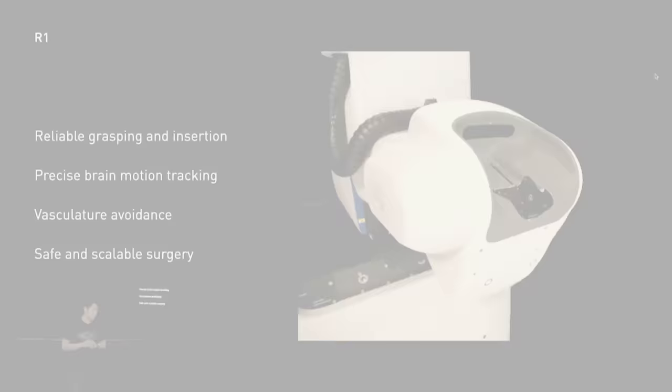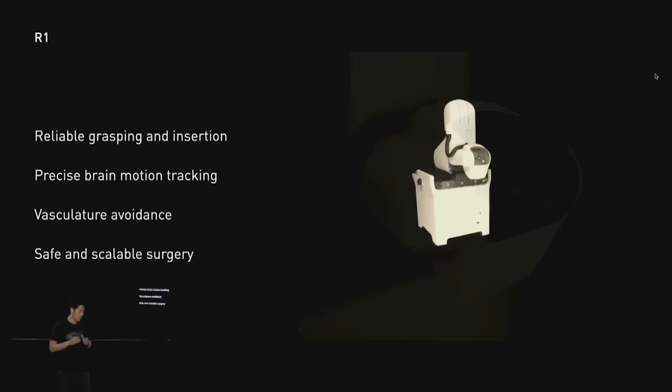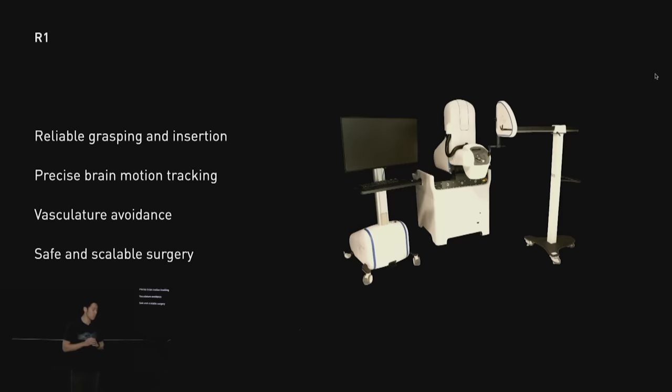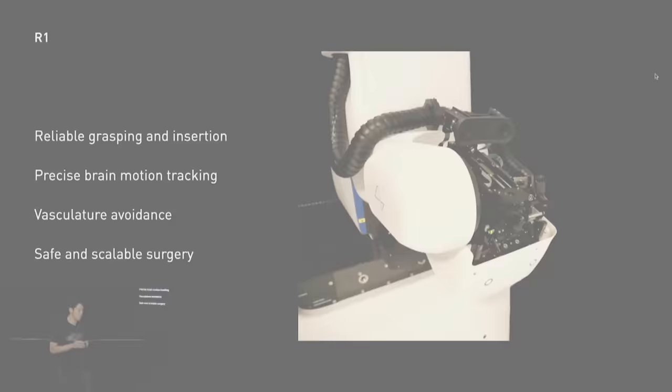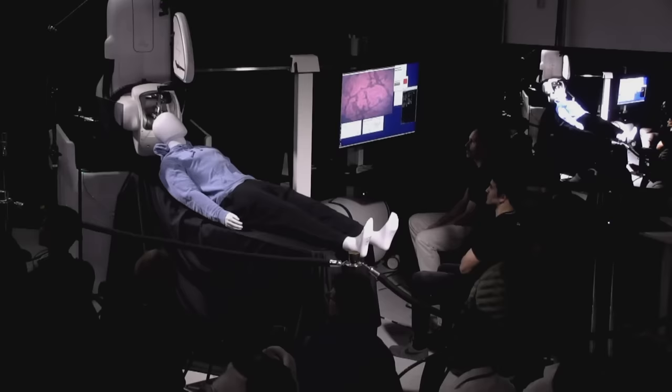For implanting our device safely into the brain, we built a surgical robot that we call the R1 robot. It's capable of maneuvering these tiny threads that are only on the order of a few red blood cells wide and inserting them reliably into a moving brain while avoiding vasculature. So here it is. That's our R1 robot with our patient alpha who is lying comfortably on the patient bed.